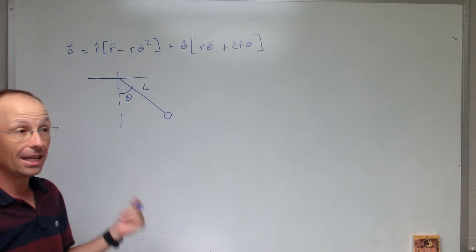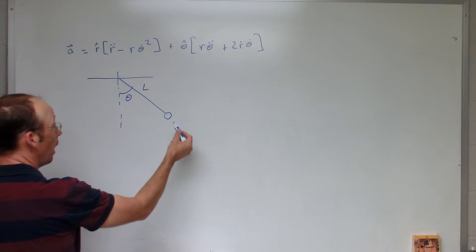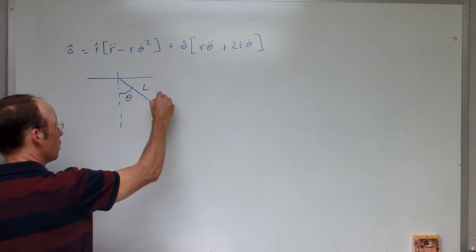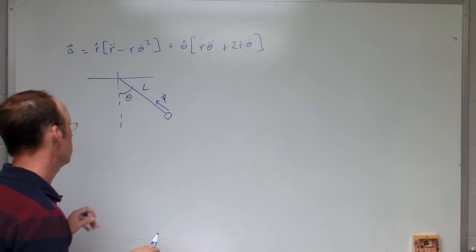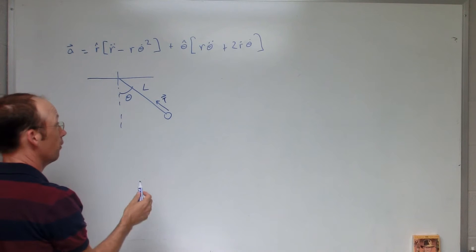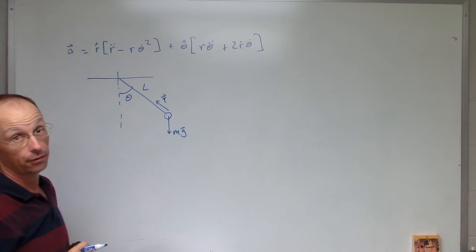So, the first thing we want to do with any problem is draw the forces on that diagram. I only have two, I have the tension, and strings do this cool thing where they can only pull in the direction of the string, they can't push. So the direction of the string is the direction of the tension force, and near the surface of the earth, the gravitational force is constant and straight down.